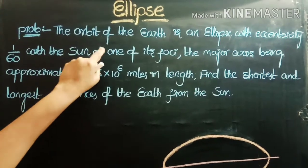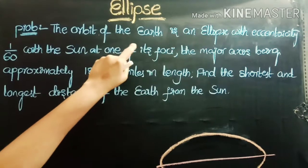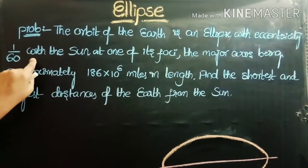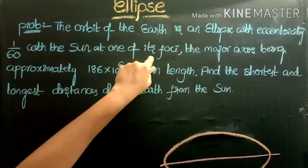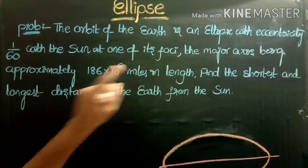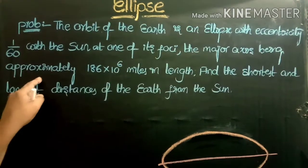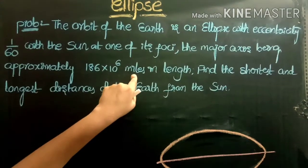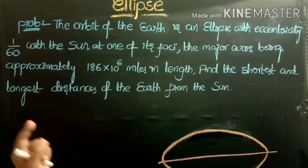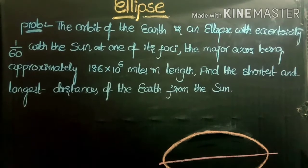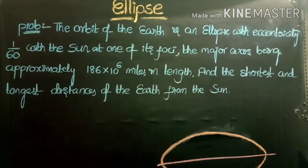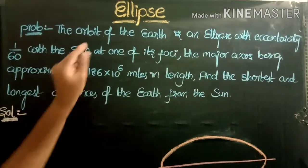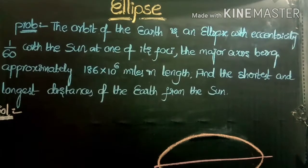First problem: the orbit of the earth is an ellipse with eccentricity 1/60, with the sun at one of its foci. The major axis is approximately 186×10⁶ miles in length. Find the shortest and longest distances of the earth from the sun. Given that the orbit of the earth is an ellipse.